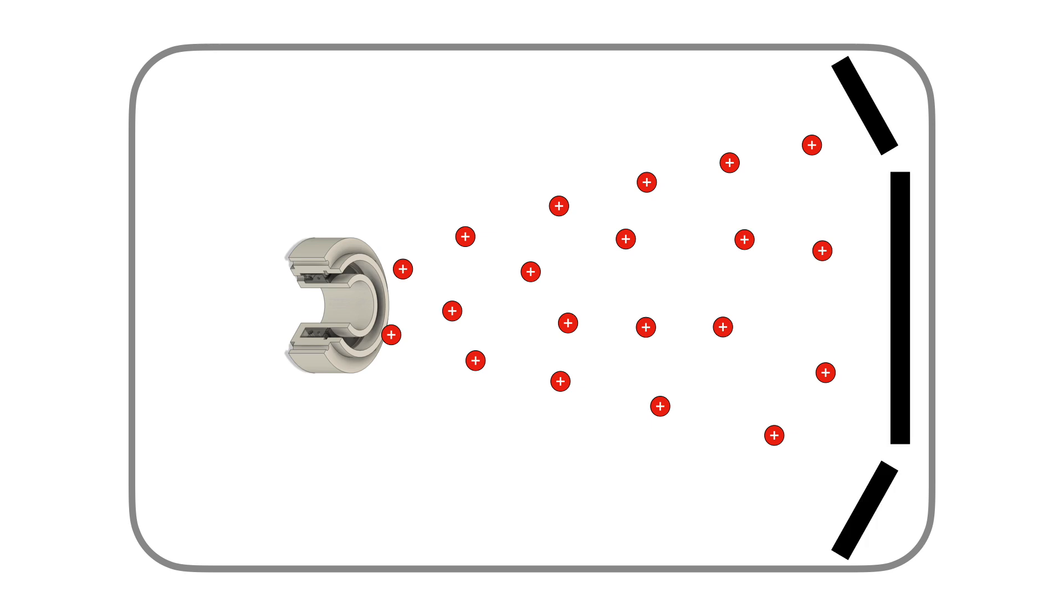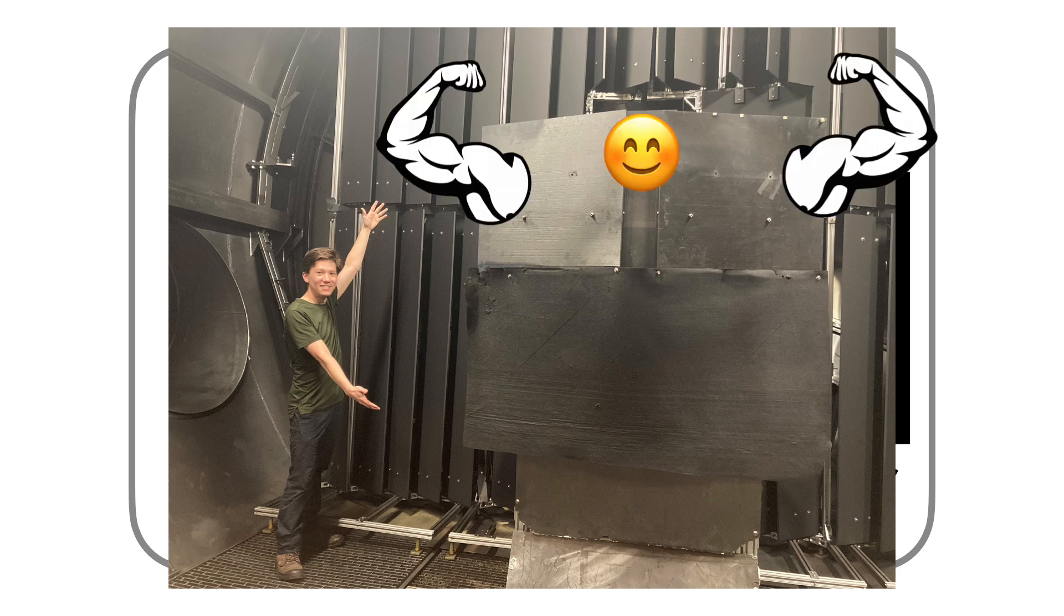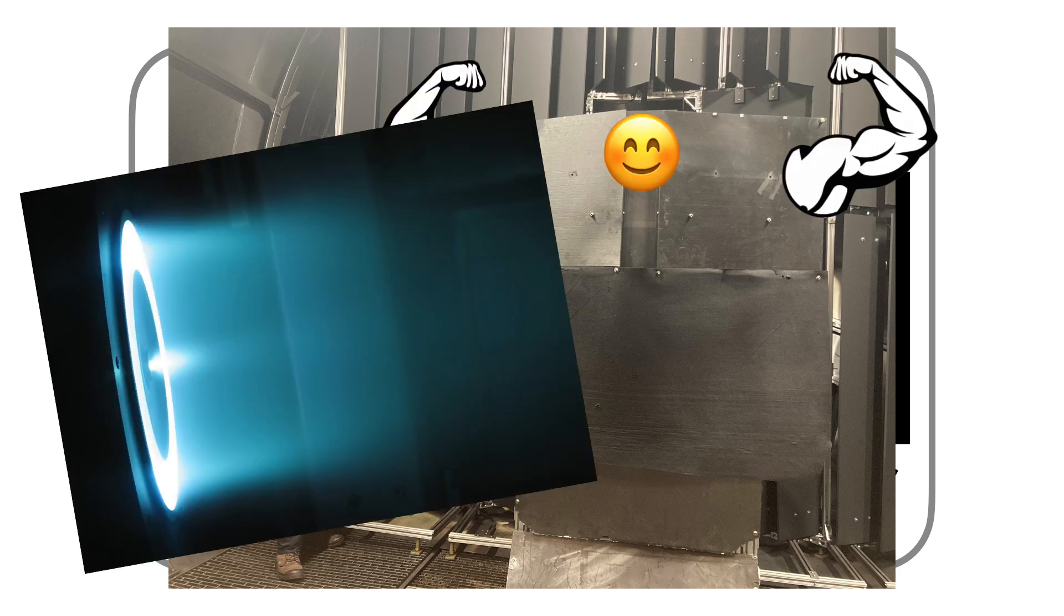To slow this process down, we armor the back wall of our chamber with graphite panels, really big graphite panels, which resist sputtering quite well. But for thrusters at high powers or long lifetimes, even graphite can't keep up. So, what do we do?